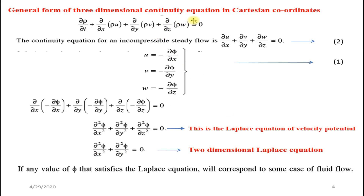Recalling the general form of the three-dimensional continuity equation in Cartesian coordinates: ∂ρ/∂t + ∂(ρu)/∂x + ∂(ρv)/∂y + ∂(ρw)/∂z = 0. Applying the conditions of incompressible steady flow — density is constant and properties do not change with time — we simplify this to: ∂u/∂x + ∂v/∂y + ∂w/∂z = 0.